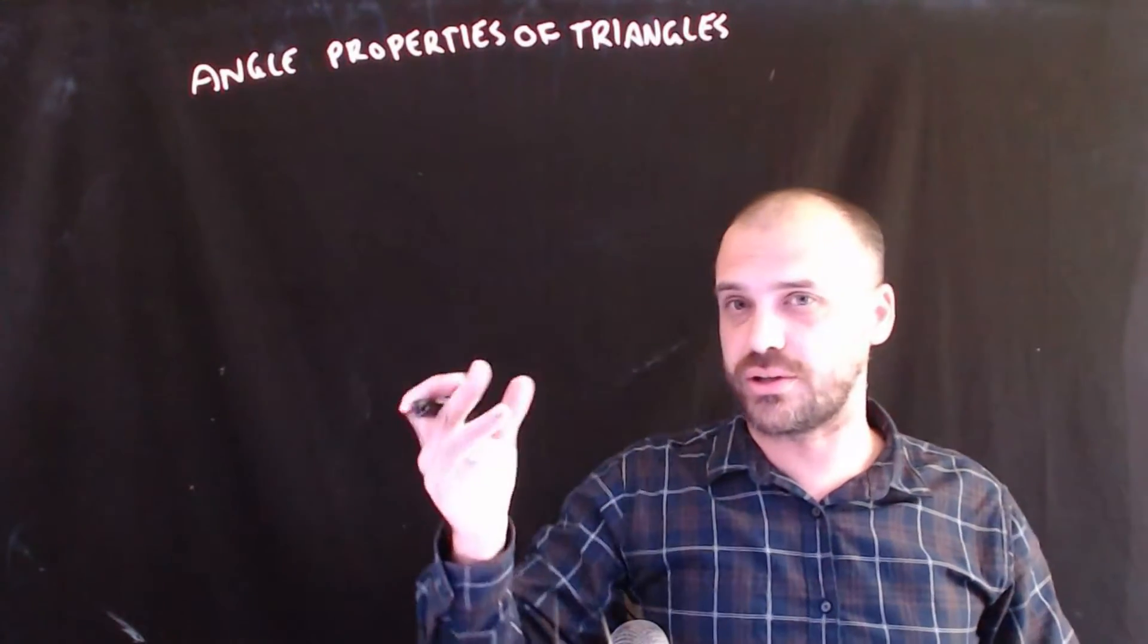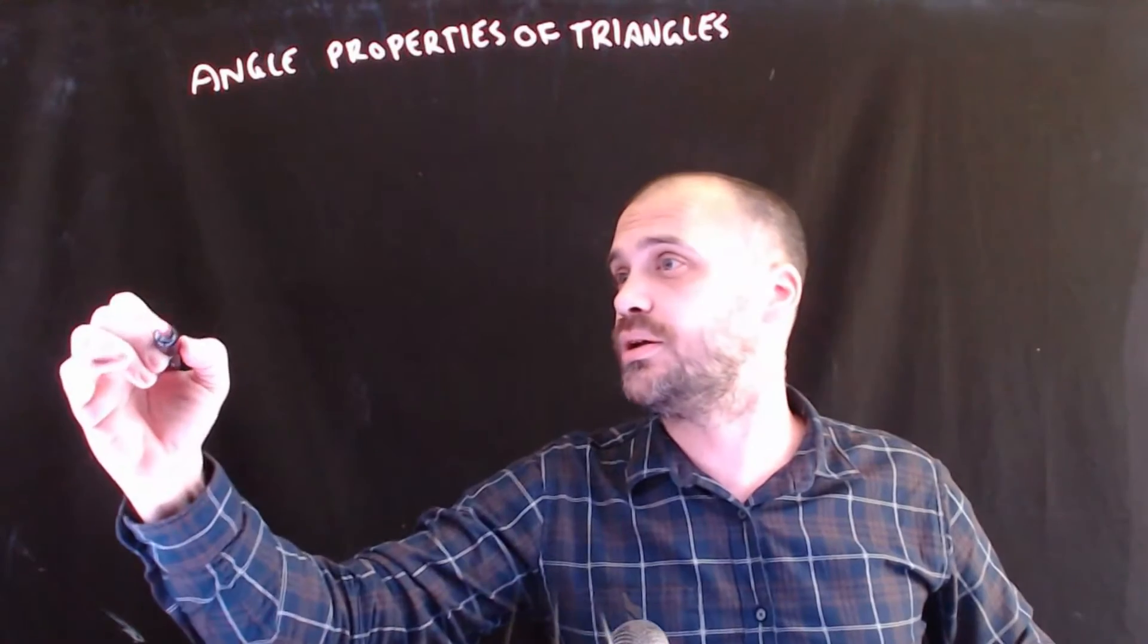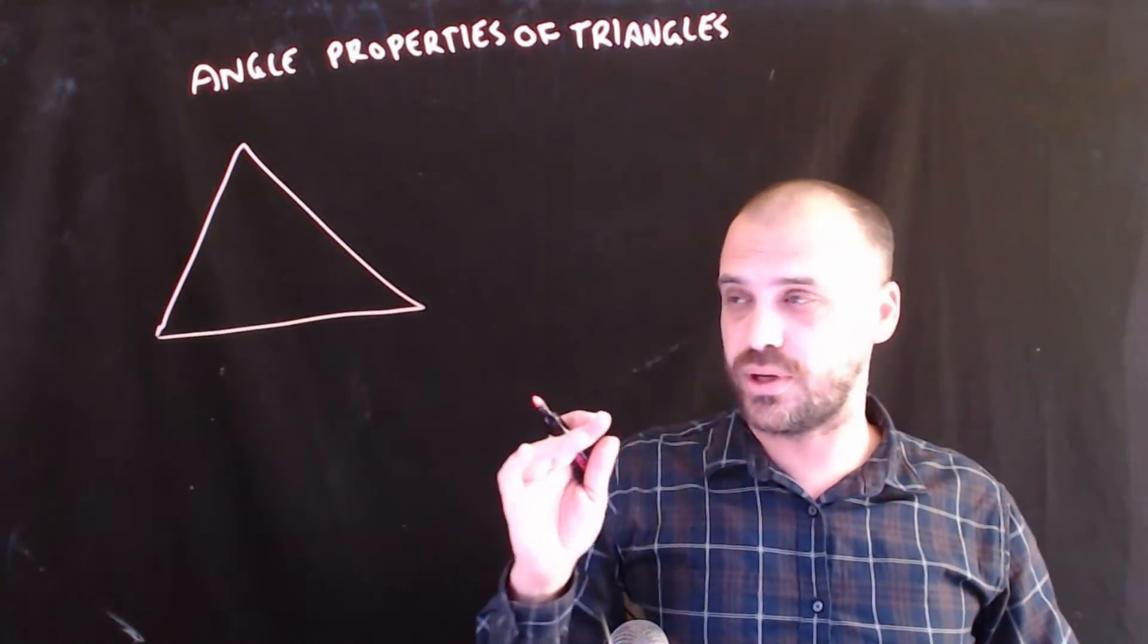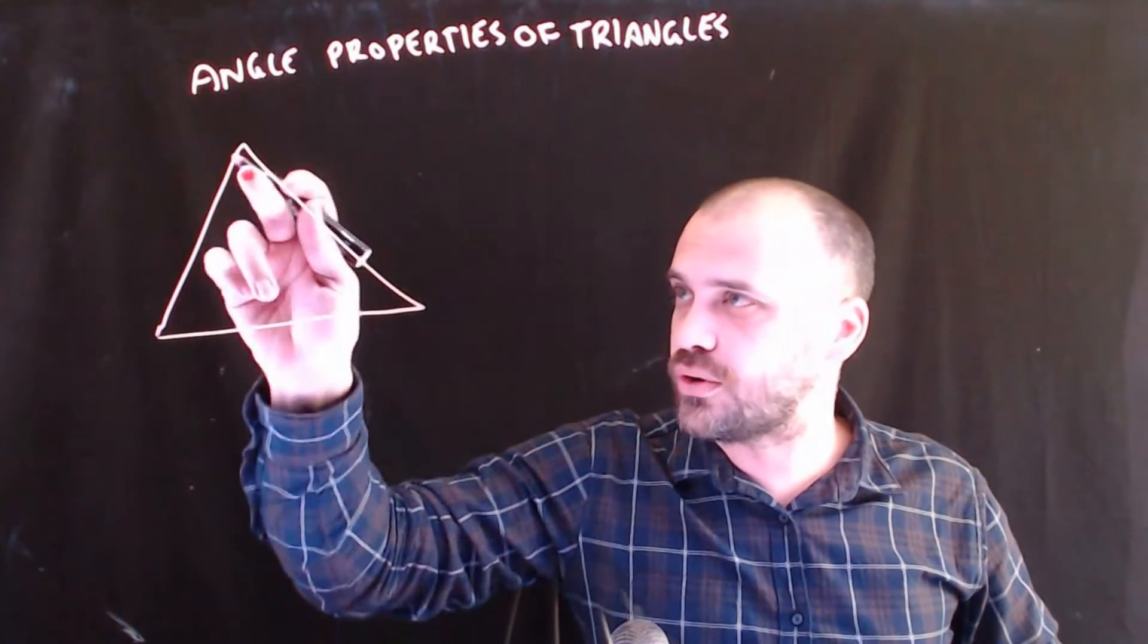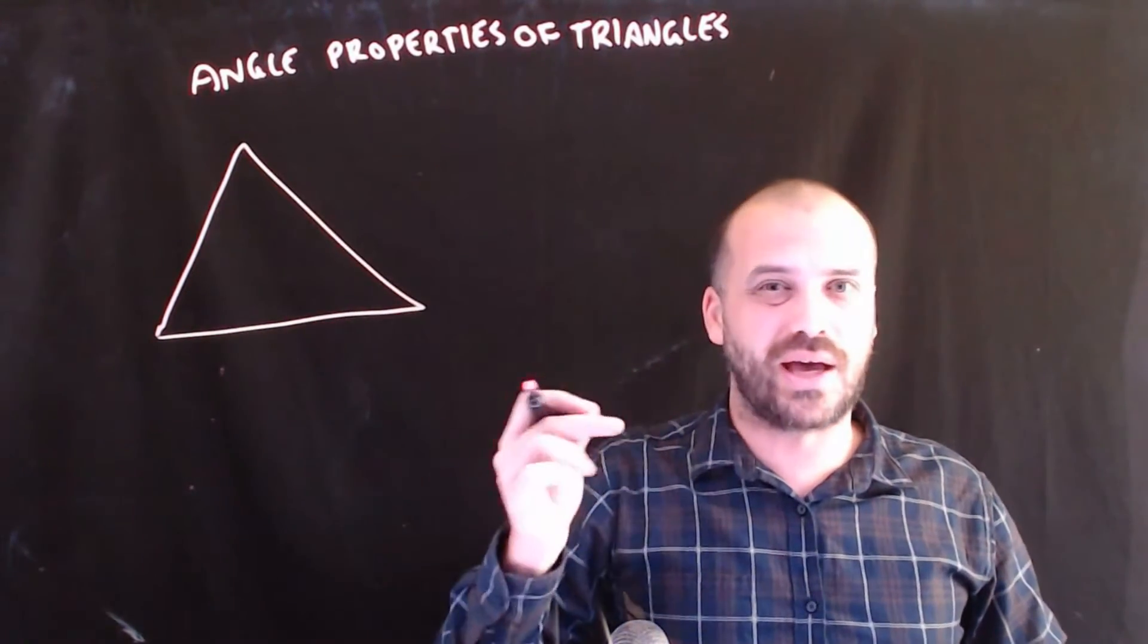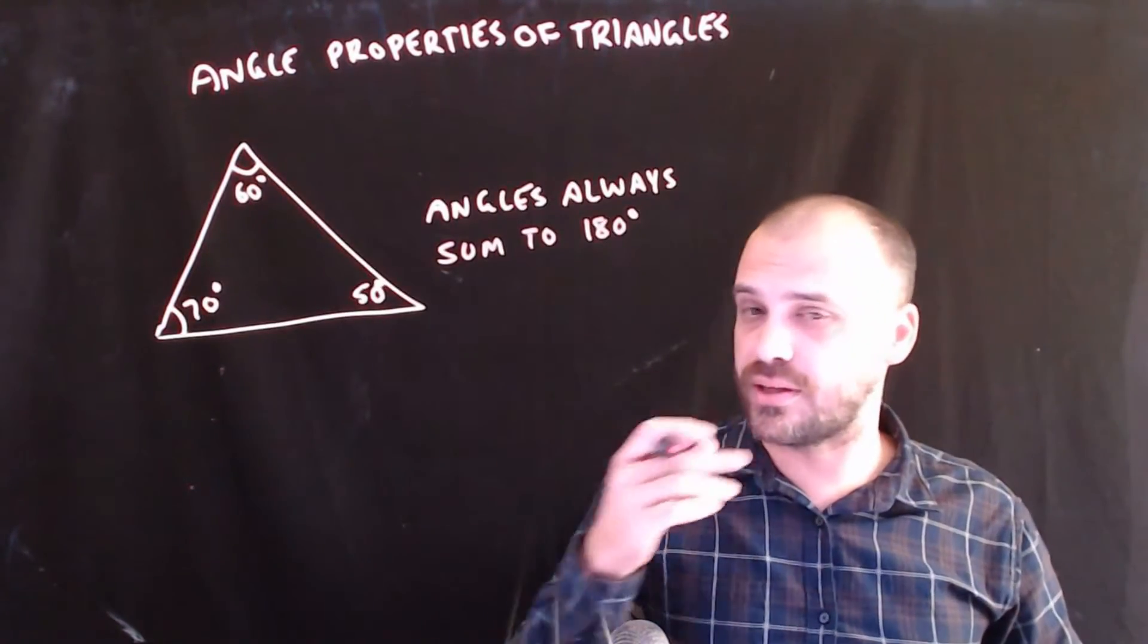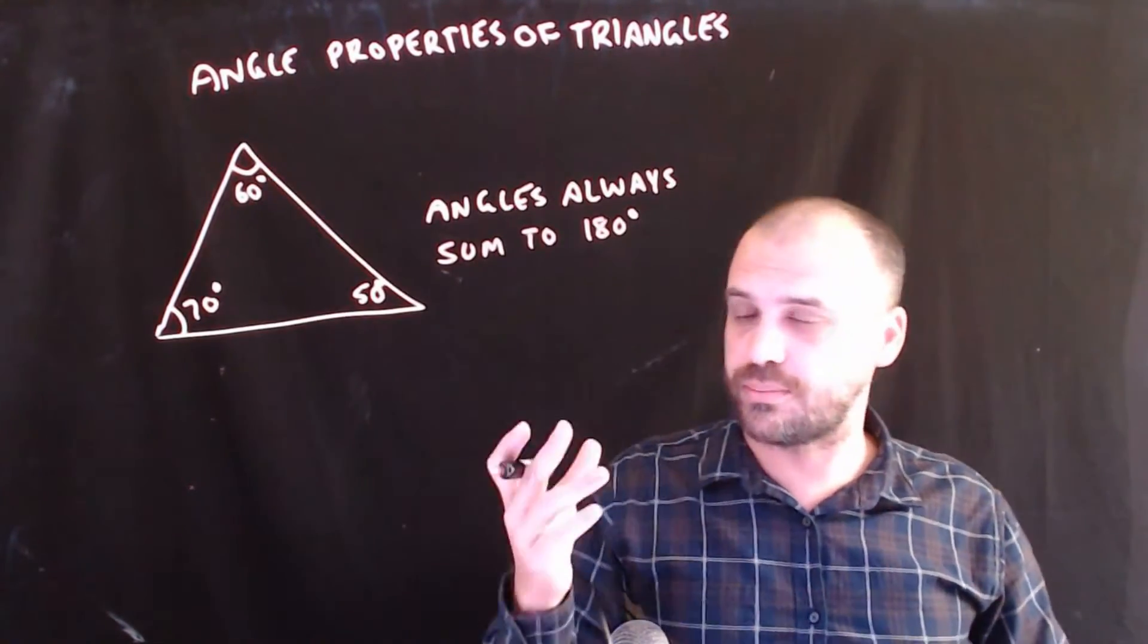So two quick properties of triangles and their angles that we need to talk about. If you have a triangle, say like this somewhere, we know that all of the angles in the triangle will add up to exactly 180 degrees. I'm not going to prove that here. You've probably already done that before. You can come and talk to me if you want me to prove it for you.